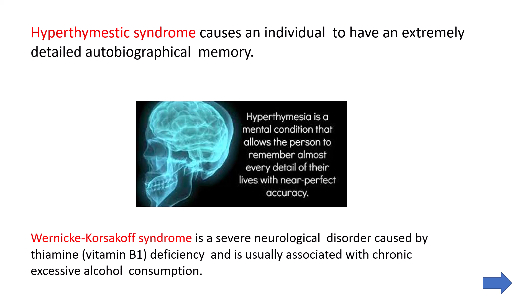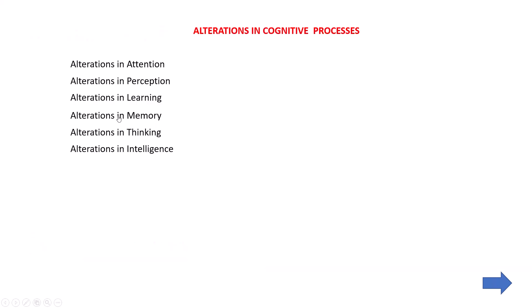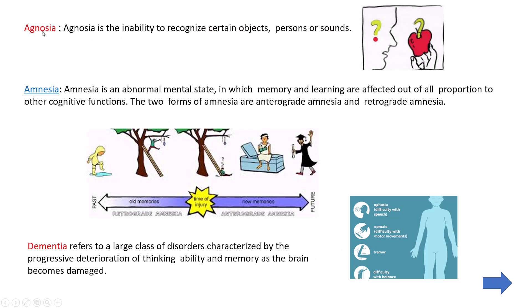Wernicke-Korsakoff syndrome is a severe neurological disorder caused by thiamine (vitamin B1) deficiency. This usually happens to persons addicted to alcohol, because alcohol prevents thiamine absorption from the intestine. Without thiamine, the memory parts of the brain are affected. This syndrome is usually associated with chronic excessive alcohol consumption. So these five conditions are the alterations in memory.